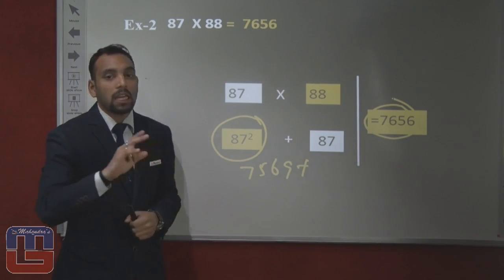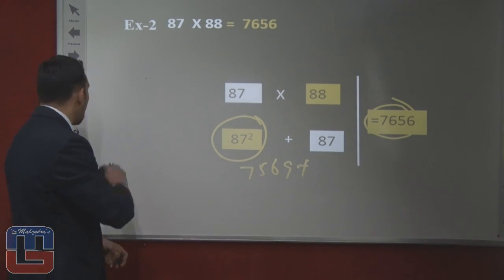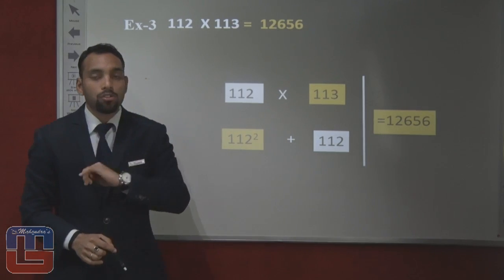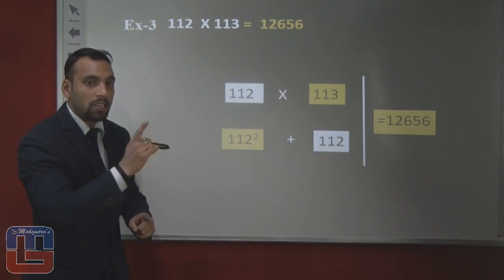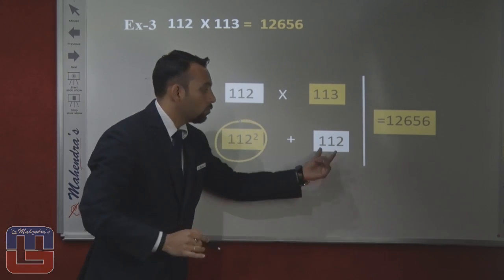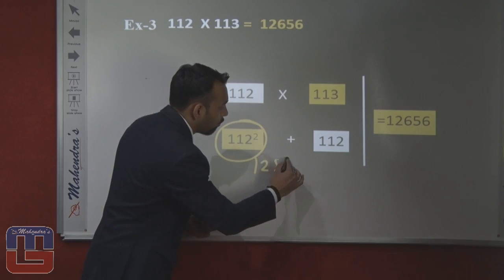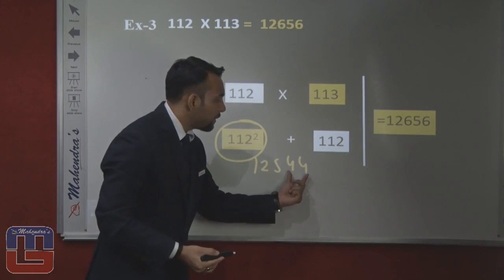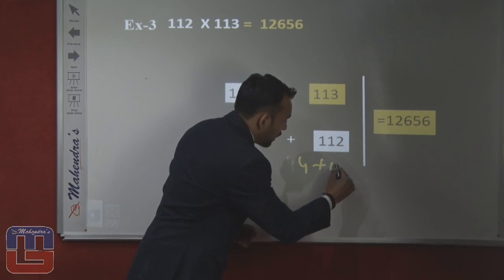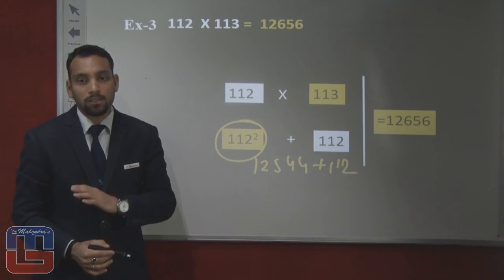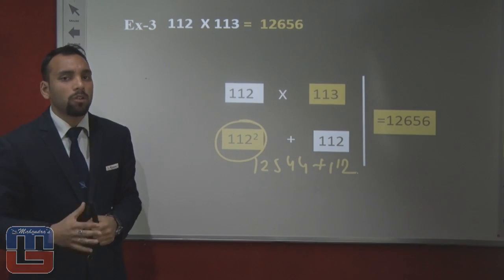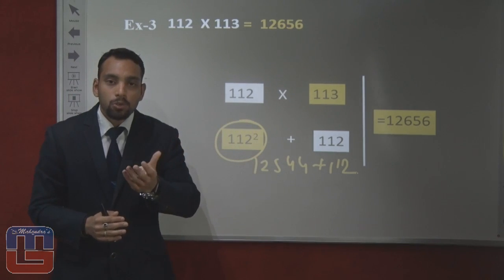Without using pen and paper, we can multiply numbers using this method. For 112 into 113, which are also consecutive numbers, we square the smaller number: 112 squared equals 12544, then add 112 to get 12656. So the answer is 12656. The rule is: for two consecutive numbers, the formula is smaller number squared plus smaller number.